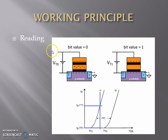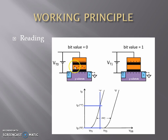Now let's see how the data is read from the flash memory. Consider these two charge states. For bit value 1, when we give a voltage VT1, a channel is set up between source and drain and we get a current ID. When we plot a graph of ID versus VGS, after VT1 we start getting the current ID for bit value 1. Now consider a floating gate transistor that has some negative charges on its floating gate. Therefore, these charges will screen some of the positive charge on the control gate, hence a larger voltage is required to set up a channel. After VT0, we start getting the current for bit value 0.